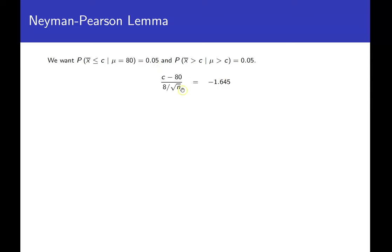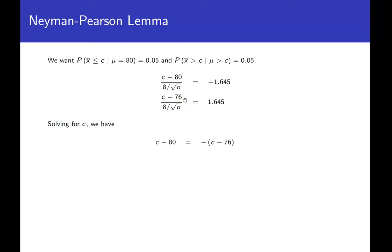For the first equation, the Z-score for C must equal negative 1.645 to give probability 0.05. So (C minus 80) divided by (8 over root N) equals negative 1.645. For the second equation with mu equals 76, the Z-score equals positive 1.645 since it's a right-tail probability. Multiplying both equations by 8 over root N gives C minus 80 equals negative (C minus 76), which quickly gives C equals 78.